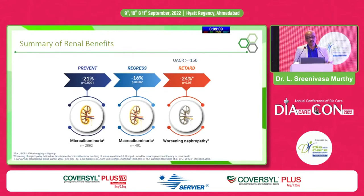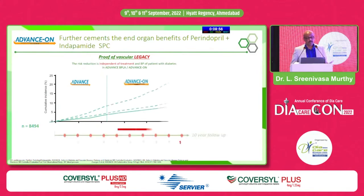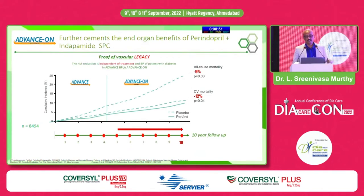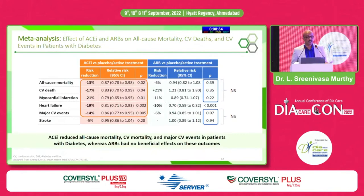The renal benefits are also shown in trials PREVENT, REGRESS, and RETARD, where UACR above 150 normalized. Further, the 'vascular legacy' of perindopril-indapamide was proven in a 10-year follow-up: CV mortality reduced by 12% and all-cause mortality by 9% even after 10 years — called the ADVANCE-ON study. Therefore, SPC therapy should be initiated early and continued long-term at the optimum dose for sustained vascular benefits.